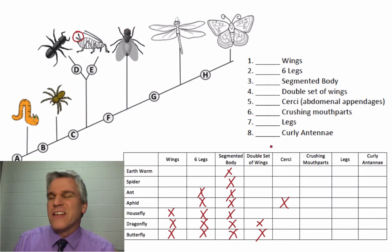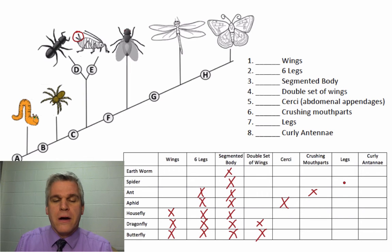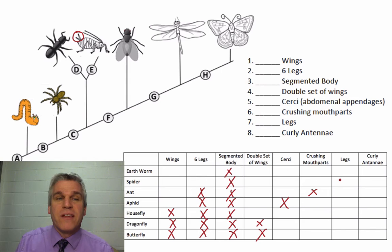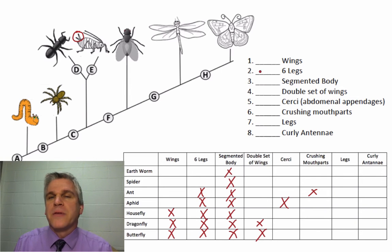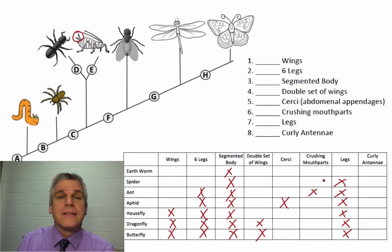Crushing mouth parts — now, this one's hard to see from these diagrams, but I will tell you that it is only the ant that has that. Next are legs. We're not looking at how many legs, just that they have legs in general. Although we can't see them on the butterfly, they do have legs. In fact, the only thing that doesn't have legs on here is the earthworm. So we can put an X on those.